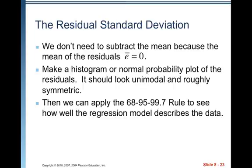We can make a histogram or a normal probability plot of the residuals. It should be unimodal and roughly symmetric. It's going to be real easy with our calculators to have a list of the residuals, and then once we bring up that list, we can do all kinds of things with it. We can look at the histogram, we can look at the normal probability plot, we can look at a scatter plot of the residuals. Then we can apply the 68-95-99.7 rule to see how well the regression model describes the data.